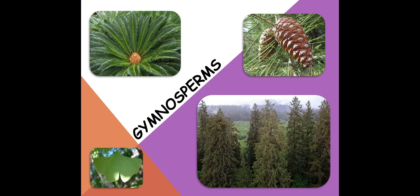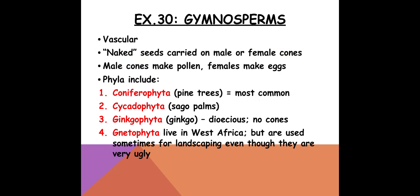So let's first talk about our gymnosperms. Gymnosperms are vascular; they have xylem and phloem. Their name is Greek and it means naked seeds, because they are carrying these seeds on cones. The male cones make pollen — they're sort of papery and smaller usually. And then there are the female cones, which are more woody and usually larger, that make eggs.